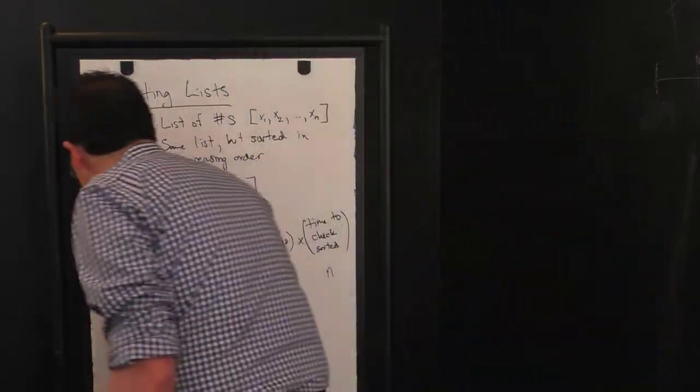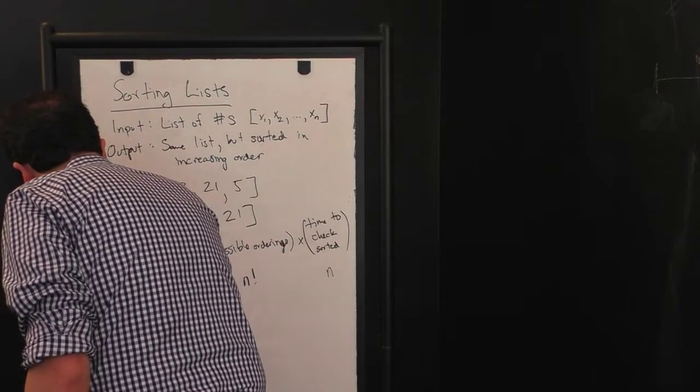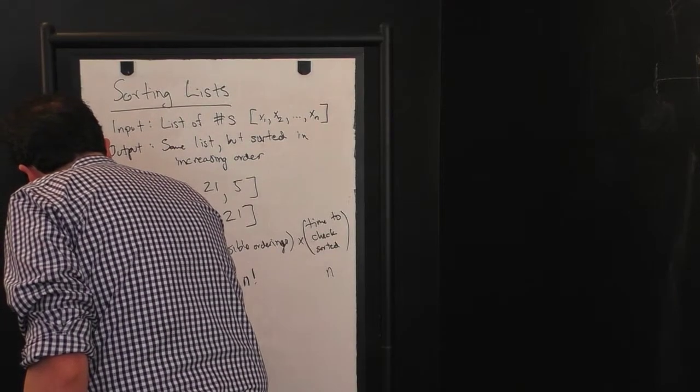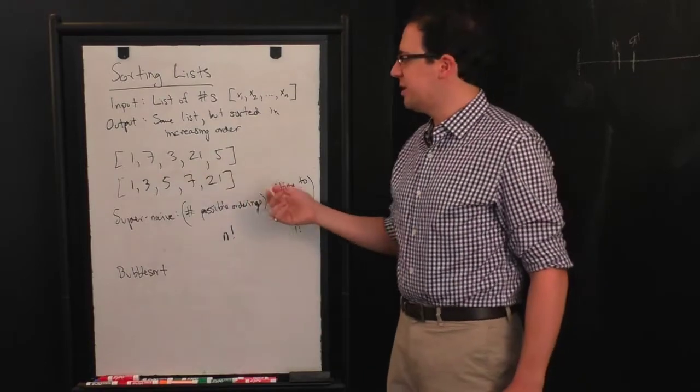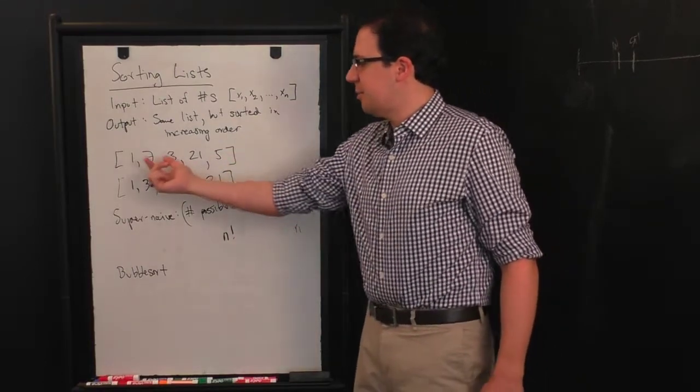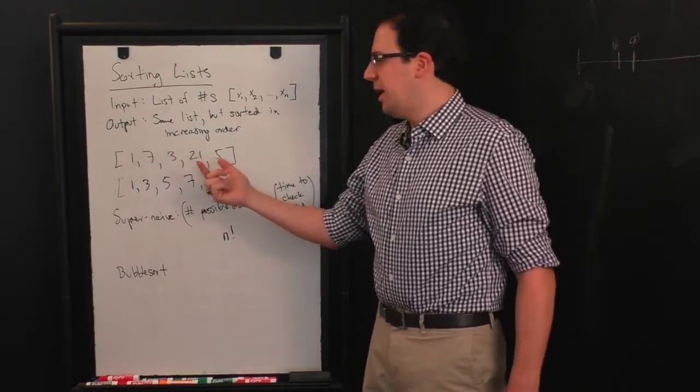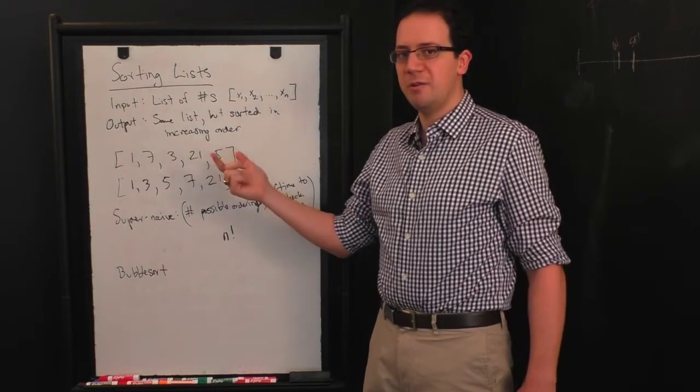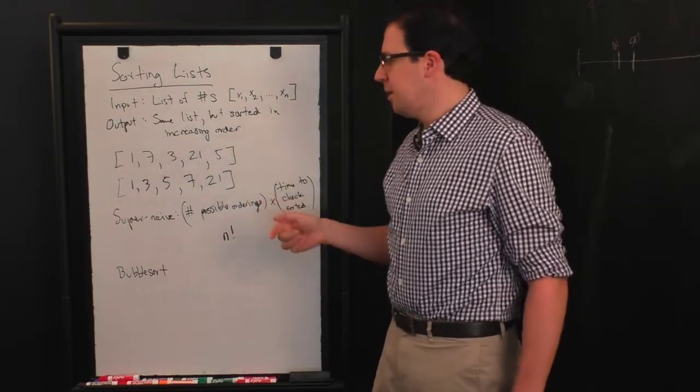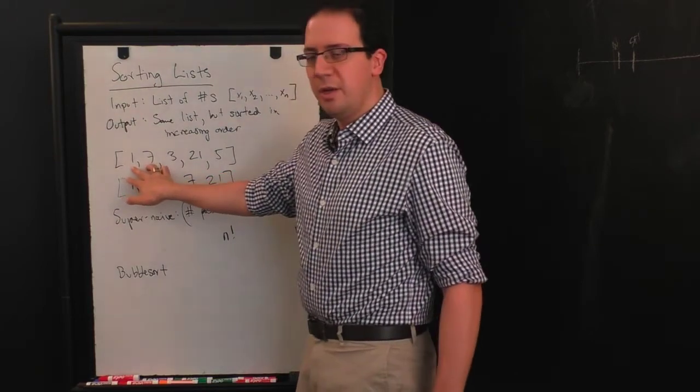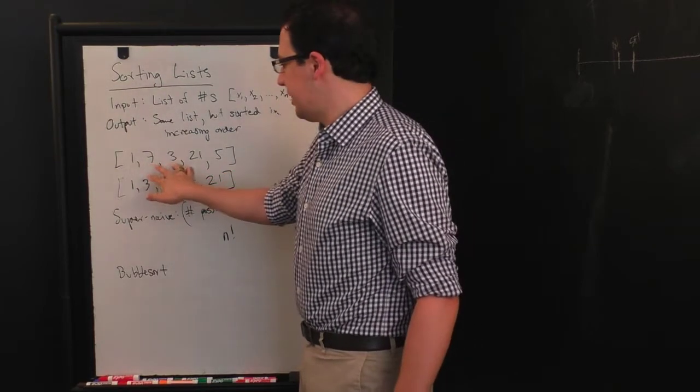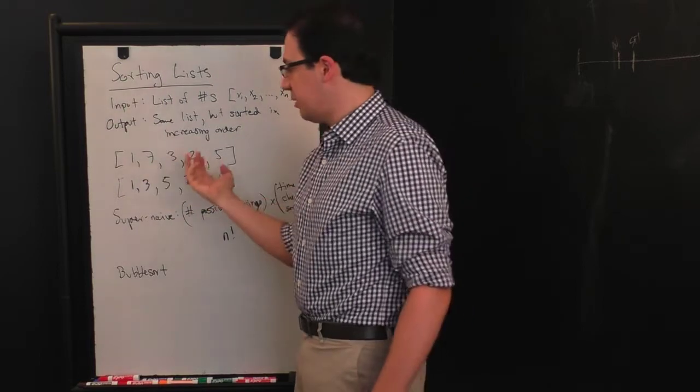So let's do something a little less naive. And this is called bubble sort. And the idea here is I'm not going to try all possible orderings. Instead, I'm going to look at my list and I'm going to start looking at pairs of numbers. And if I find any pair that's out of order, I'm going to swap them. So in this list, I would say I see 1 and 7, those are in order. So I'm going to move on. I see 7 and 3, those are out of order. So I'm going to swap them.